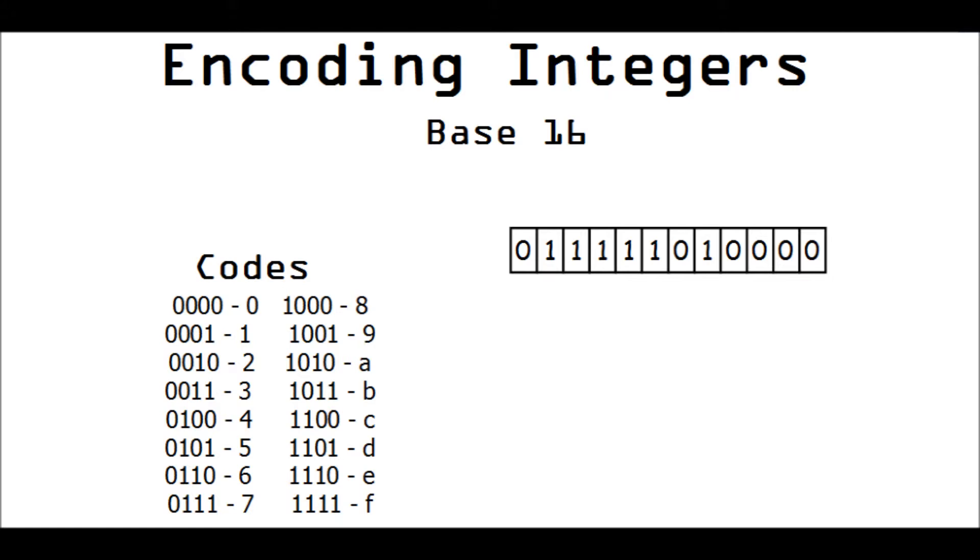And so, for an example here, this binary number is translated through this code list to be the hexadecimal number 7D0. And here is the representation of how that adds up, how that comes to be.